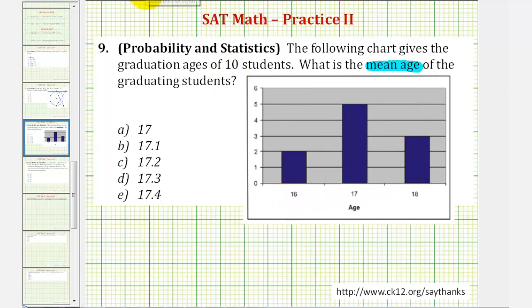Which is ten. So the mean is going to be a quotient where the numerator would be the sum of all the ages and the denominator would be ten because there are ten ages or ten students.